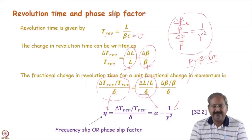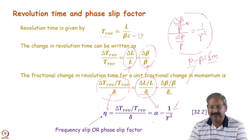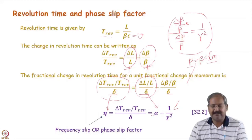In some literature, instead of delta T / T they use delta f / f — fractional change in revolution frequency — and then the sign of the equation is reversed. In that case the slip factor becomes 1/gamma^2 − alpha. So in literature you will see both conventions. Some references define the frequency slip factor as alpha − 1/gamma^2 and others as 1/gamma^2 − alpha, because of the basic difference in definition: whether revolution time or revolution frequency is used.